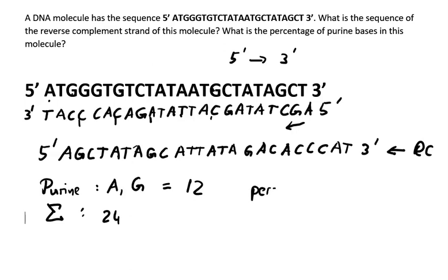And if we want to express it as percentage, so percentage of purines this would be 12 divided by the total number, that will be 12 divided by 24, and that gives us exactly 50%. So I hope this makes sense and thank you very much for watching.